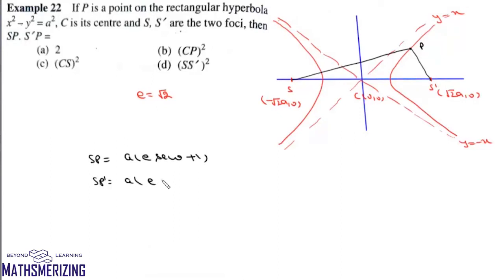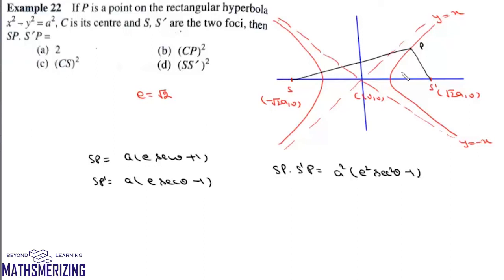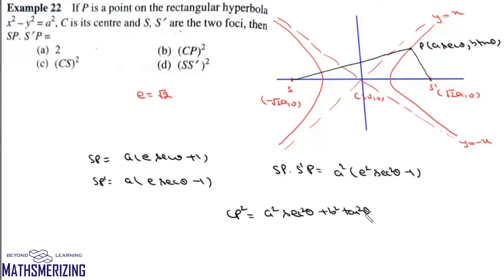For a point P = (a sec θ, b tan θ) on the hyperbola, SP = a(e sec θ + 1) and S'P = a(e sec θ - 1). Multiplying: SP · S'P = a²(e² sec² θ - 1). Then CP² = a² sec² θ + b² tan² θ.